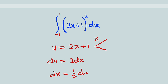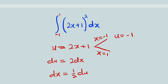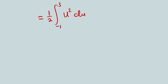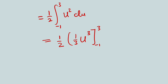When x is negative 1: negative 1 times 2 gives us negative 2, plus 1 is negative 1. Therefore u is equal to negative 1. When x is equal to 1, that is the upper limit: 1 times 2 is 2, plus 1 is 3. Therefore u will be equal to 3. So our limit is from negative 1 to 3. We are now free to integrate: this equals 1 over 2, and if you integrate u squared you obtain 1 over 3 times u to the power of 3, with limit from negative 1 to 3.